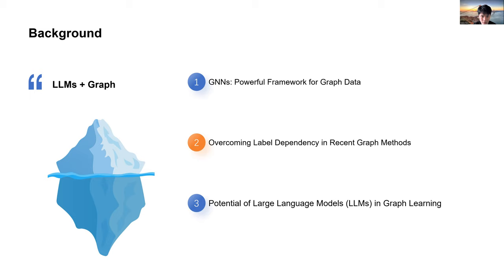Graph neural networks, which have been used before, are good at handling structured graph data and have shown impressive performance, but they have heavily relied on labeled data, which limits their ability to work with new unlabeled data. Large language models excel at generalizing, making them a promising solution for overcoming limitations in graph learning, particularly with new unlabeled data.